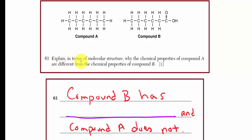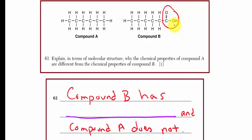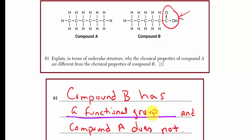Question 61: Explain in terms of molecular structure why the chemical properties of compound A differ from those of compound B. The structures differ in a key way. Compound A is six carbons surrounded by hydrogens. Compound B is nearly the same, but has one key difference: a functional group — specifically a carboxyl group with a double-bonded oxygen and a hydroxyl group. Compound B has a functional group; compound A does not. That's a valid answer, and there are many other ways to state it.